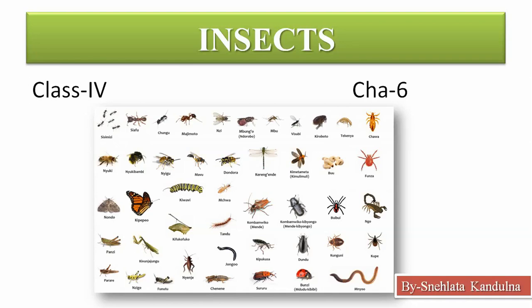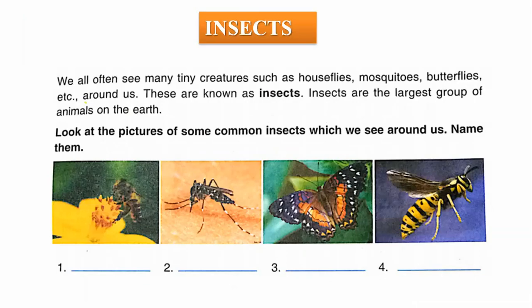Welcome, children, to the science class. Today we will start a new chapter — Chapter 6: Insects. The question is: what are insects? Insects are tiny creatures. You must have often seen such small creatures as house flies, mosquitoes, butterflies, etc. around us. These small, tiny creatures are known as insects.